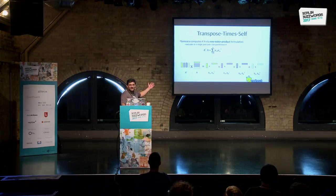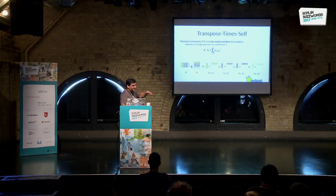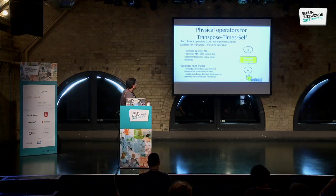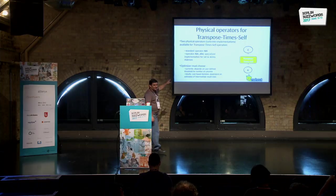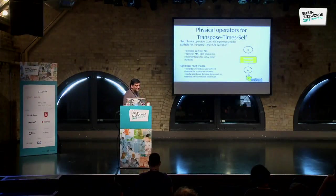In the physical layer, we have two physical operators for the transpose-time-self operation: the standard A^T A operator and A^T A slim for tall-and-skinny matrices. The optimizer chooses between them based on heuristics — specifically the number of columns in the matrix relative to a threshold, and the cost in terms of intermediate results produced. This is how the logical and physical translation works in Mahout Samsara.